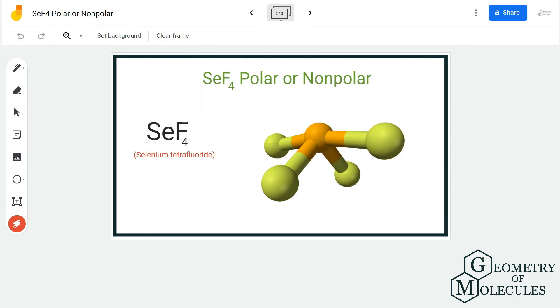So here is its shape, and you can see here due to the repulsion of lone pair on the central atom, these bonds are pushed towards each other, and hence the structure is not symmetric.